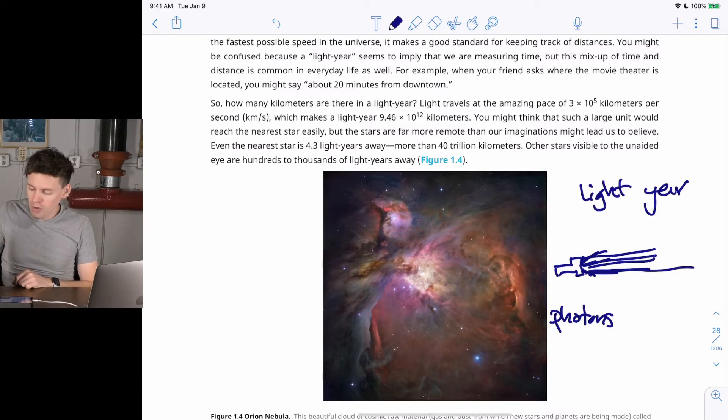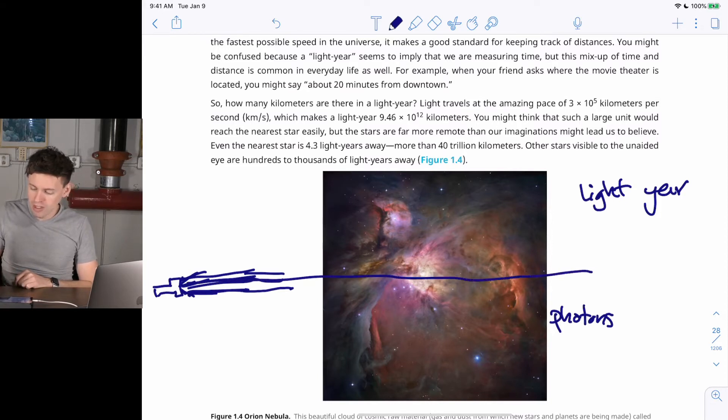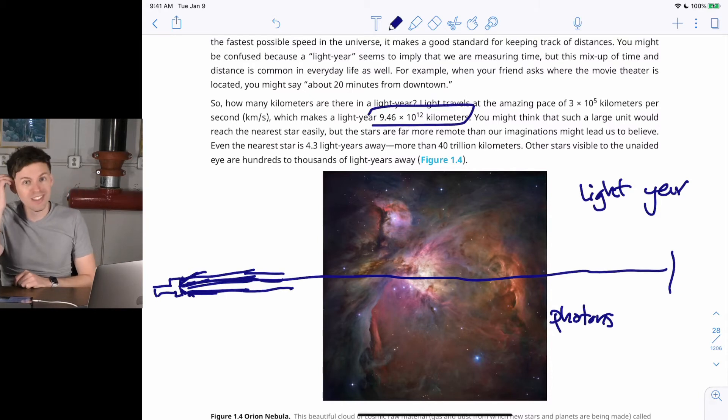You might ask yourself, where would the edge of that light ray be after one year? So let's take our flashlight here, put it over there. We've got our rays of light. After one year, how far will it travel? It turns out to be 9 trillion kilometers. 9.5 times 10 to the 12 kilometers. That's a really far distance. That's a huge number.